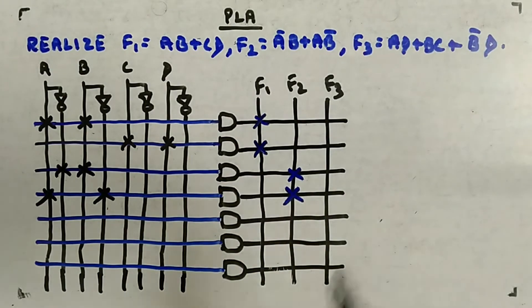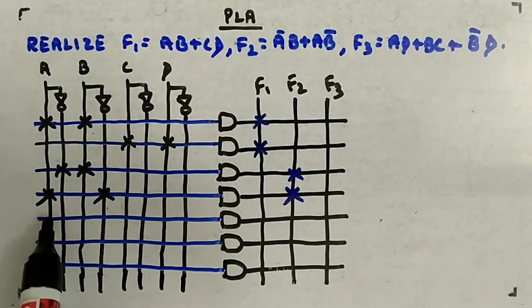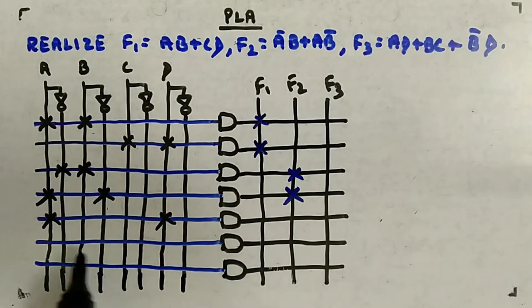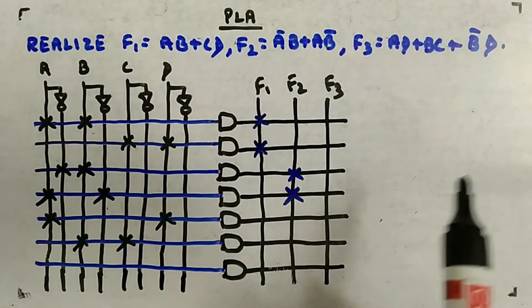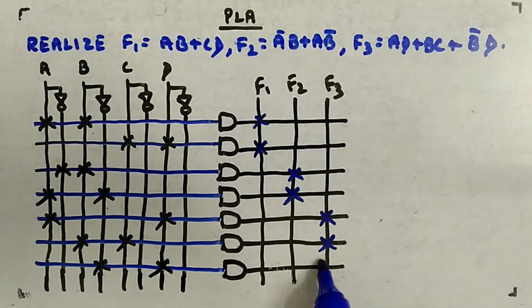Then you need three terms: AD, BC, and B bar D. So here A and then from here D, and then BC we want, so BC. And finally you want B bar D, B bar D. So these guys will give you, the last three will give you f3.